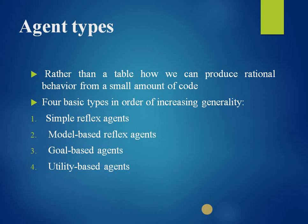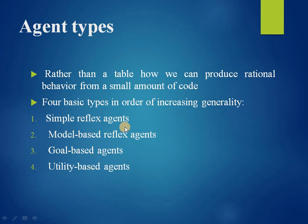The key challenge for artificial intelligence is to write programs that produce rational behavior from small programs rather than from vast tables. The four basic types of agents, in order of increasing generality, are: simple reflex agent, model-based reflex agent, goal-based agents, and utility-based agents. In today's session we are going to see what a simple reflex agent is.